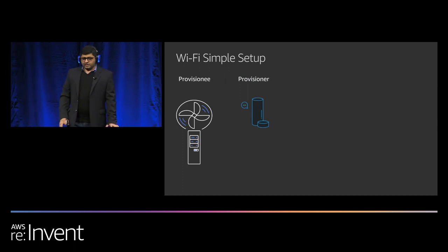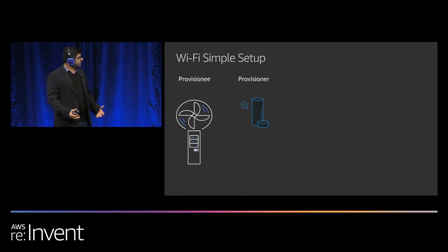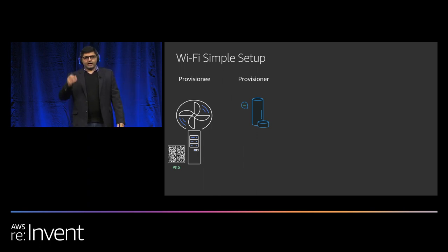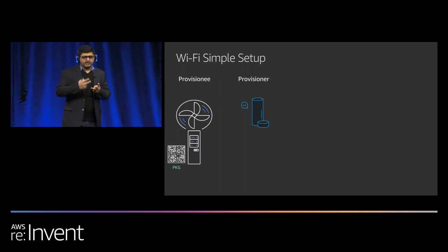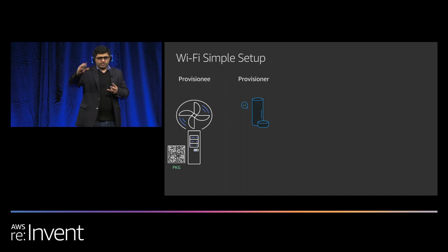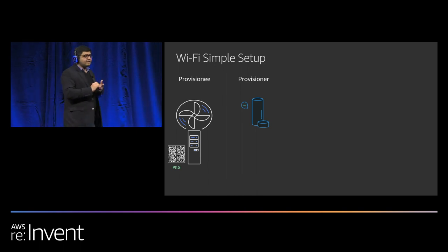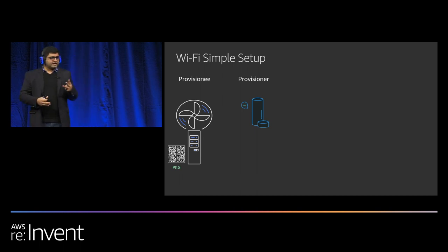The voice interface is done. What we provide is the concept of a provisioner and a provisionee. The first experience is called zero touch setup — I buy this device from Amazon, I plug it in, and my Echo device says I found a new fan. You don't have to transfer Wi-Fi credentials or link it to your account. Wi-Fi setup accomplishes three things: it links the product to your account, it transfers Wi-Fi credentials directly without user intervention, and it connects the virtual copy to the physical device.